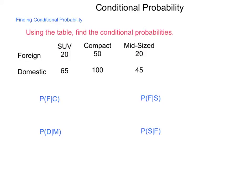We want to find the probability of F given C — the probability that a vehicle chosen is going to be a foreign build, given the fact that it is a compact car. The formula is: P(F|C) = P(F and C) / P(C). The probability of F and C — foreign compact cars — is 50. Divided by the probability of C, all compact cars, which is 50 plus 100, or 150. Simplifying this, we get one-third, or 33.3%.